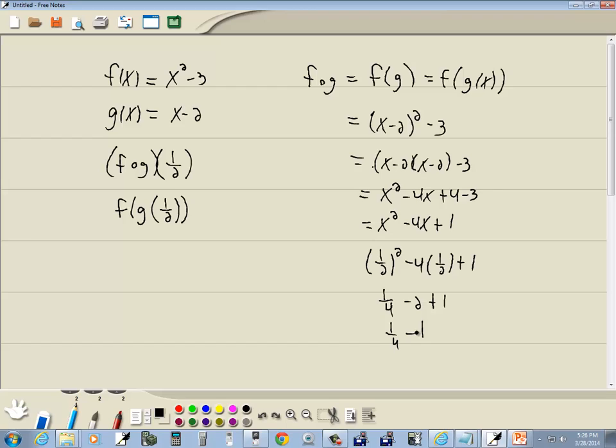This is a mixed number. You take negative 1 times 4 is negative 4 plus 1 is negative 3. So we get negative 3 fourths. You could also, at this point up here, plug in 1 half right here and you would have got the same answer. So there's two different ways of working that if you're doing it by hand.